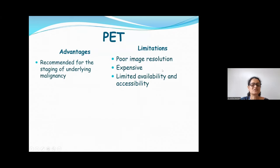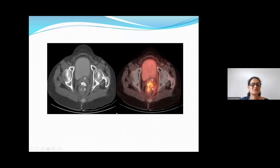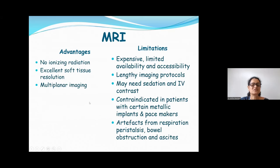PET is recommended only for staging of malignancy and has poor anatomical resolution, but occasionally during staging it can accidentally reveal a fistula — here showing a nice rectovaginal fistula. MRI is not advised for all patients because they cannot hold contrast for long, there are associated artifacts, and imaging protocols are long. However, MRI is indicated in specific cases.